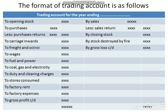Next is fuel and power, which is a direct expense used in the manufacturing process, so it is entered in the trading account. Next is duty and clearing charges — duties include indirect taxes such as GST, export duty, and import duty, as well as clearing charges.